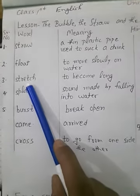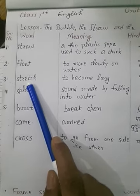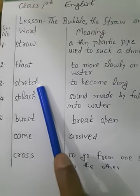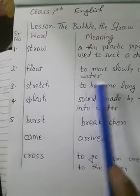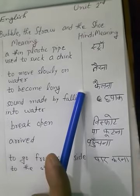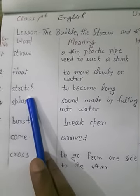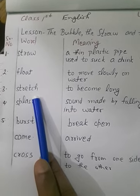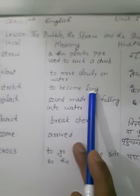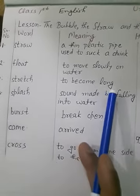Number three is 'stretch.' Stretch means to become long. In the story, the Straw stretched from one bank to another — from one bank to the other bank. To become long is stretch.